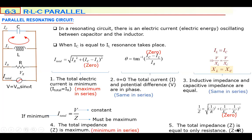Fourth property: total impedance is opposite. In a parallel resonating circuit, total impedance is maximum, but in a series resonating circuit it is minimum. The fifth property — Z equals R — is the same in both. So properties two, three, and five are the same in both series and parallel, but first and fourth are opposite. Keep this in mind in case they ask about series resonating circuits.